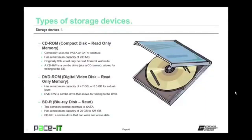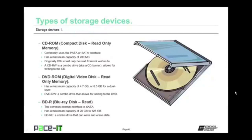Technology marches on and we came up with the DVD-ROM, the digital video disk read-only memory. It has a maximum capacity of 4.7 gigabytes in its single layer format and 8.5 gigabytes for a dual layer format DVD. DVDs also came out in the DVD-RW — a combo drive that allows for writing to the DVD. Then we have the BDR, the Blu-ray disk read. Its common internal interface is SATA, and it has a maximum capacity ranging from 25 gigabytes to 128 gigabytes for a three-layer BDR. A BDRE is a combo drive that can write and erase data to the Blu-ray disk.